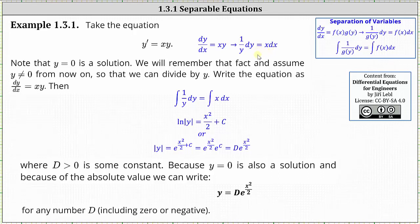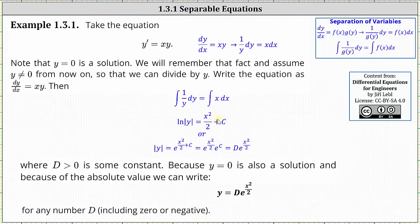Notice in this form we have all the y parts on the left and the x parts on the right. Now we integrate both sides of the equation. The integral of one divided by y dy equals the integral of x dx. The integral of one divided by y dy is equal to the natural log of the absolute value of y, and on the right, the integral of x dx is equal to x squared divided by two plus a constant c.